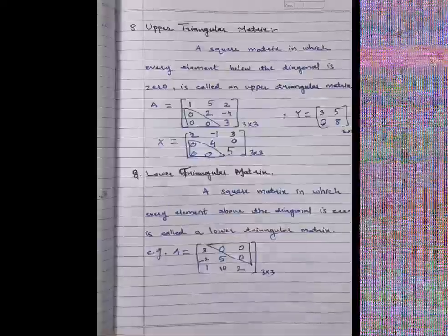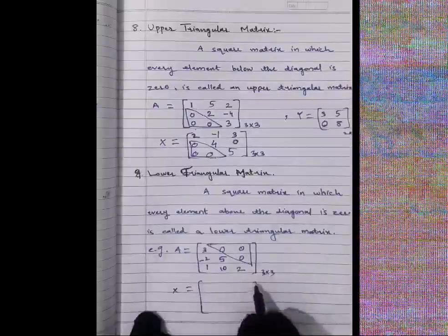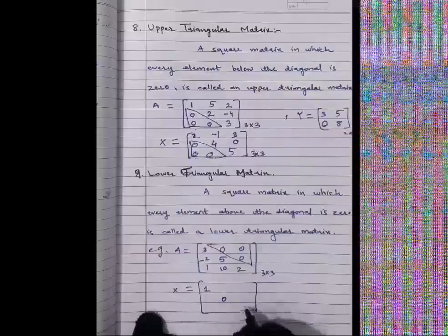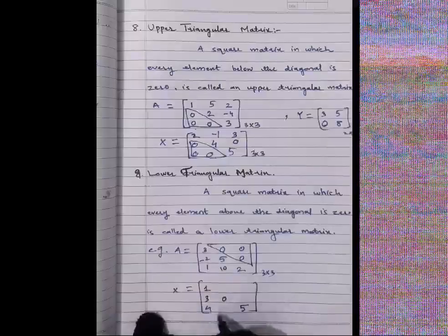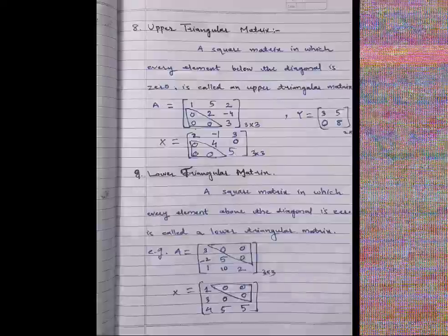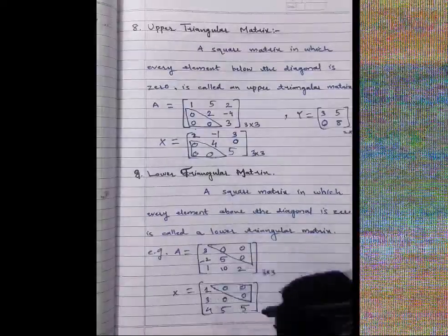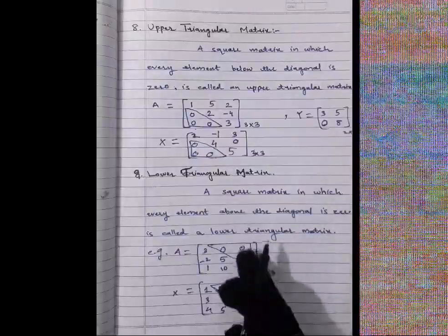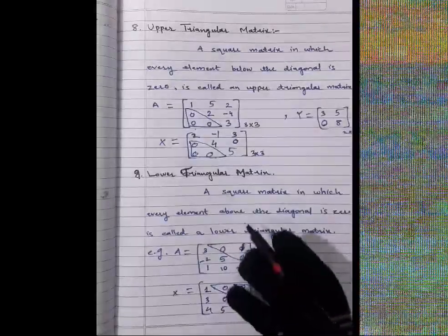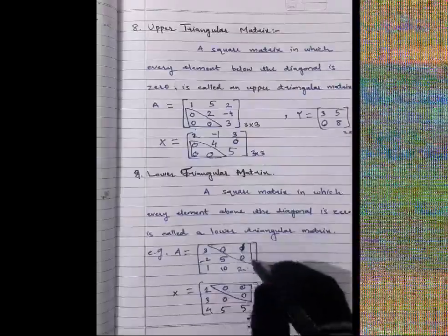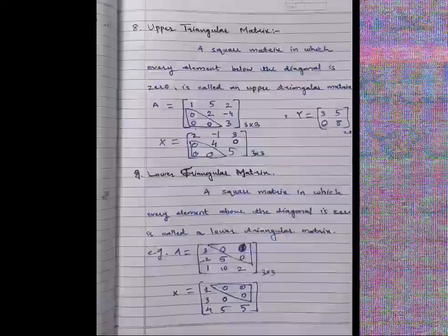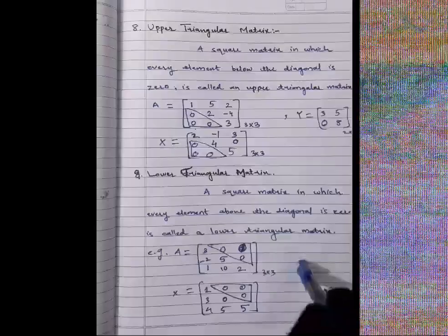Another lower triangular example: diagonal elements may include a zero, and below-diagonal elements can be any values. But every element above the diagonal must be zero. If we write a 1 above the diagonal instead of 0, it is no longer a lower triangular matrix, because not every above-diagonal element is zero.